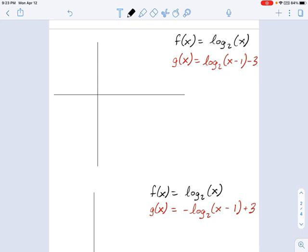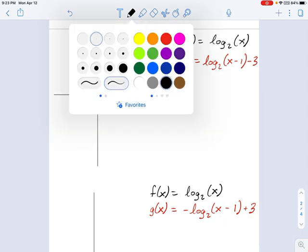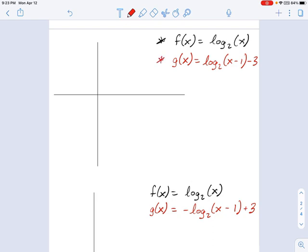If you have your parent function logarithm—what I've drawn here is the parent function I want to use, f(x) = log₂(x). If you know what your parent function looks like, you can work through what's going to happen in this transformed function g(x).